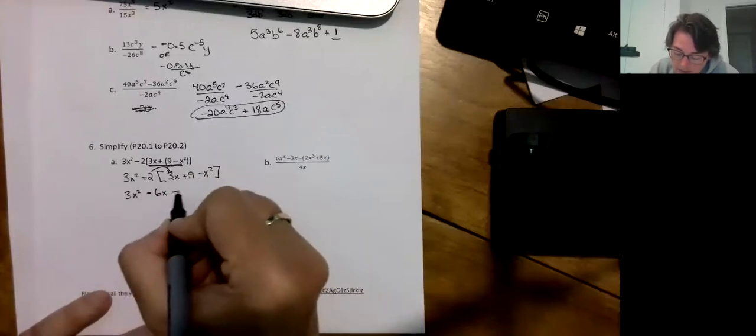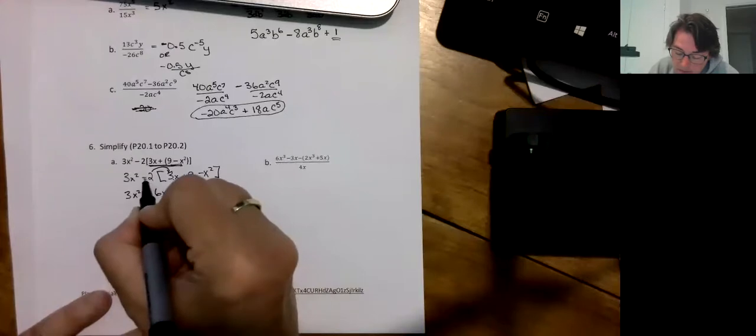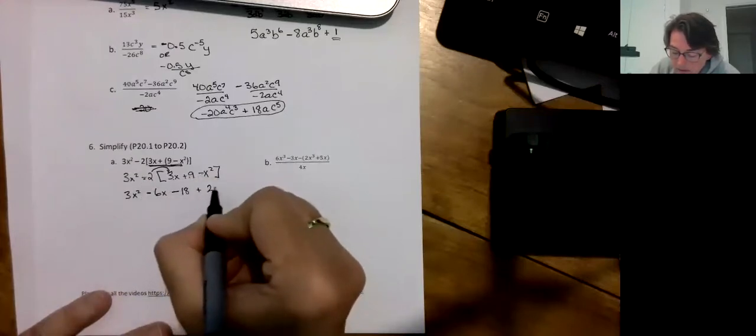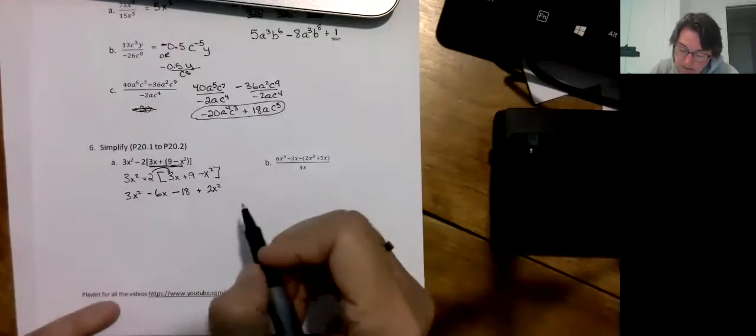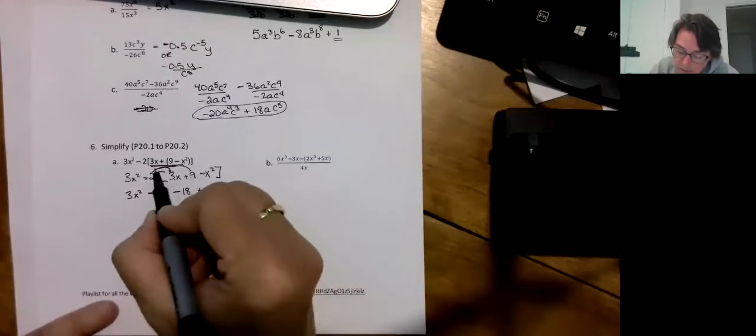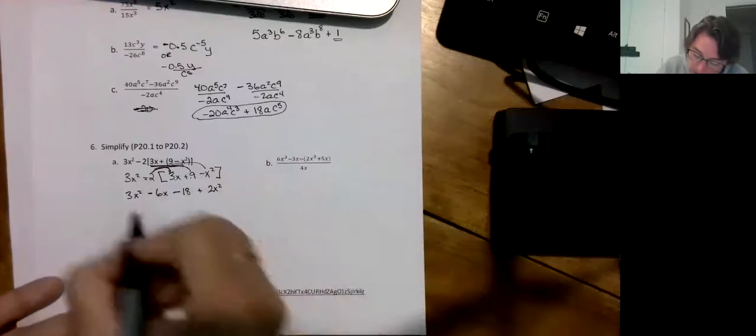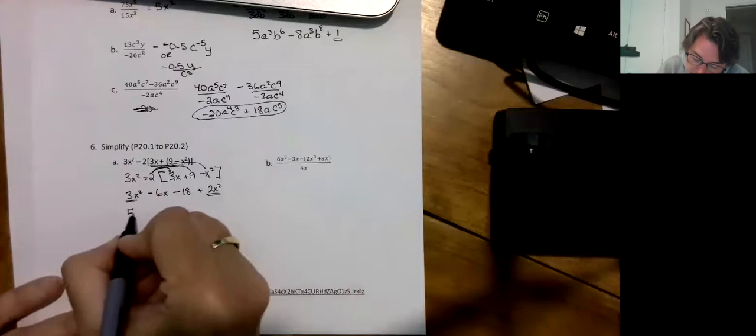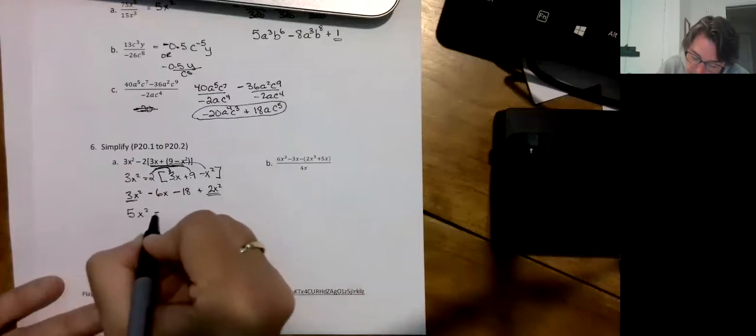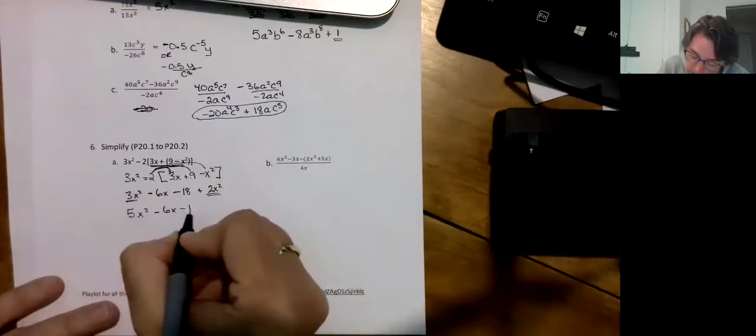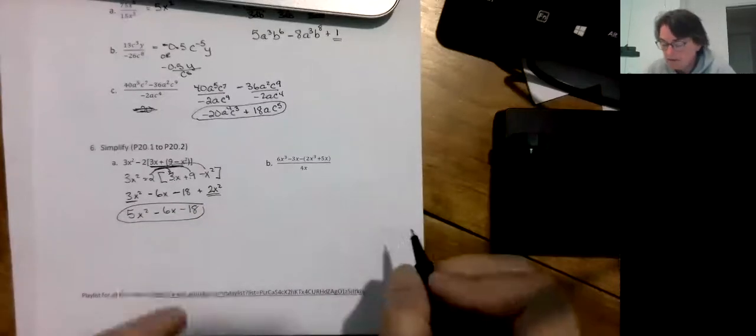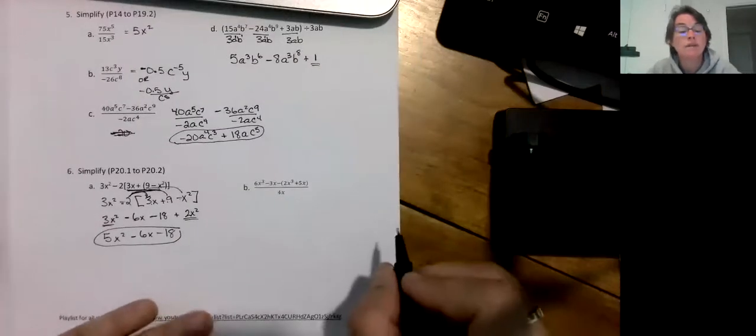That was really boring because I can't even put those together. So we're going to multiply through now. 3x² minus 2 times 3x is minus 6x. Minus 2 times 9 is minus 18. Minus 2 times minus x² is plus 2x². I need to get rid of my brackets because I distributed all the way through. Now I can collect some like terms. There's an x², there's an x², 5x² minus 6x minus 18. Sorry that wasn't really very exciting was it.